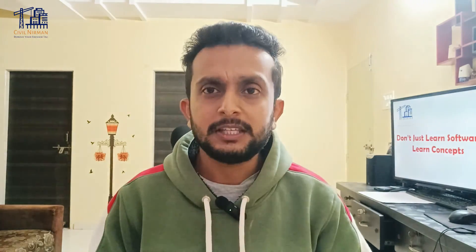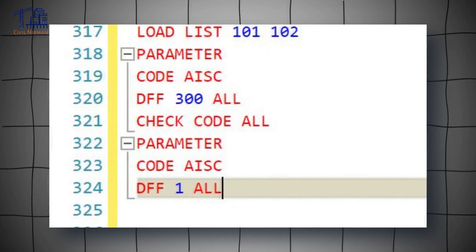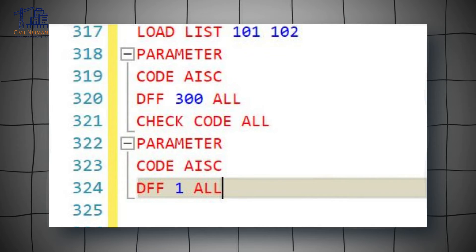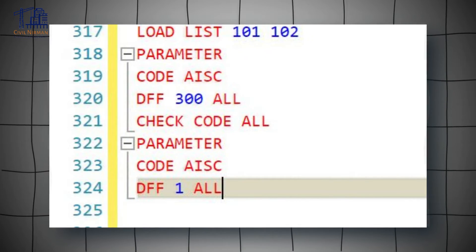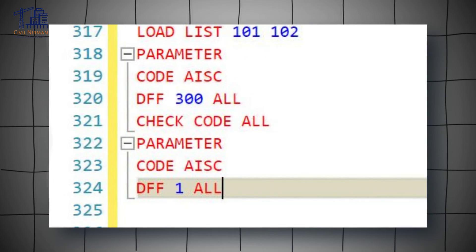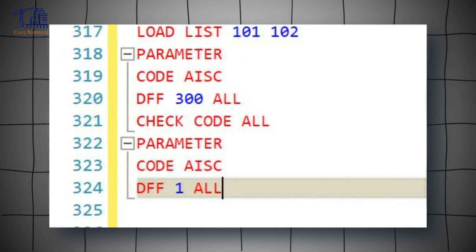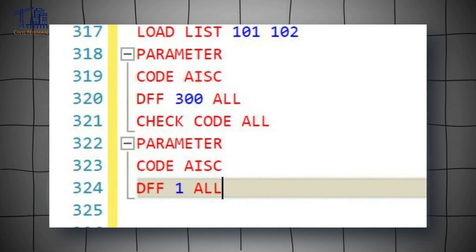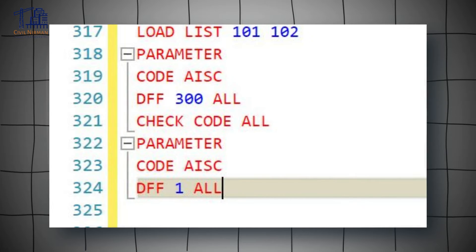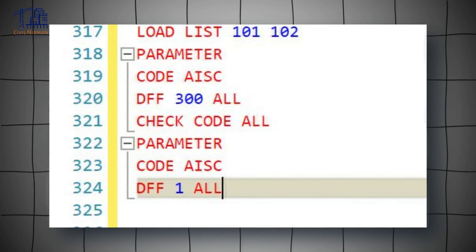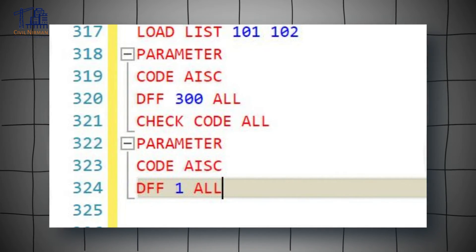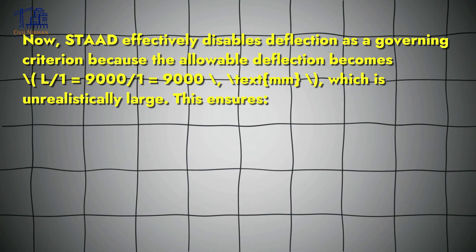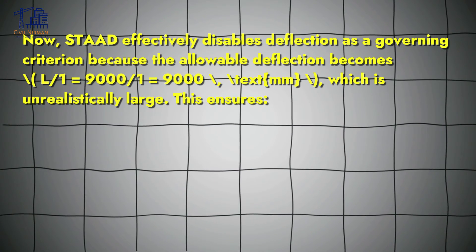Now, after the deflection check, we need to reset DFF. Here is the syntax: PARAMETER, code specification (e.g., AISC), DFF 1, ALL. So the entire sequence will look like the initial deflection check commands followed by this reset block.